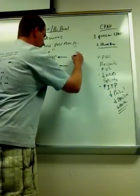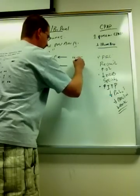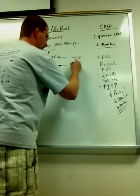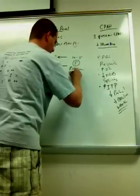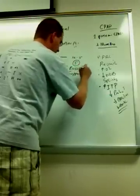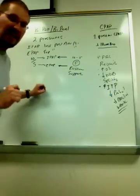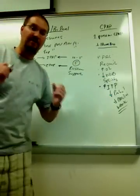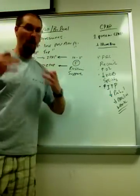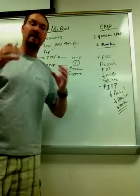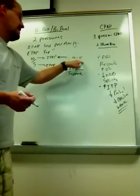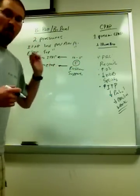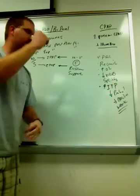The difference between my IPAP and my EPAP, the difference, so ten subtract five gives me five, is known as the pressure support. Now this is very important because in BiPAP, I can affect ventilation. How well somebody ventilates, how well somebody clears carbon dioxide ultimately. And the difference between IPAP and EPAP is the pressure support. If that pressure support increases,